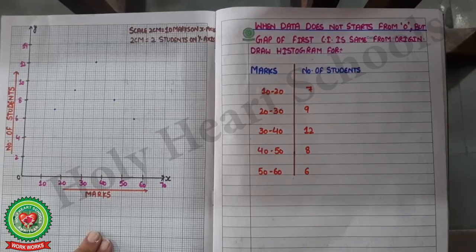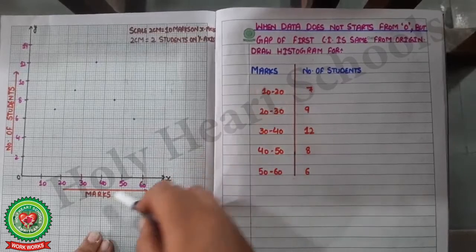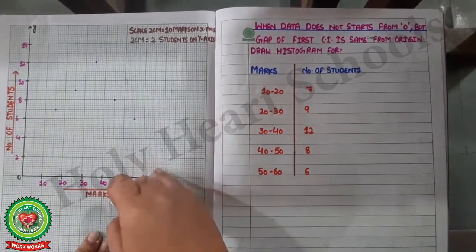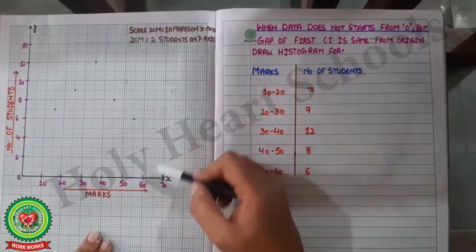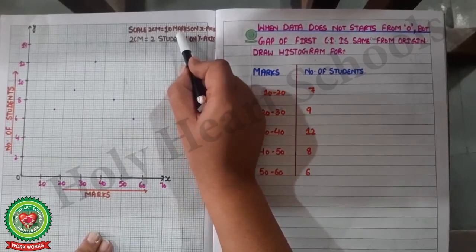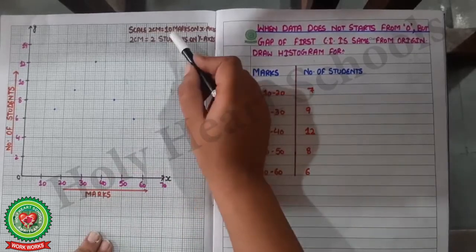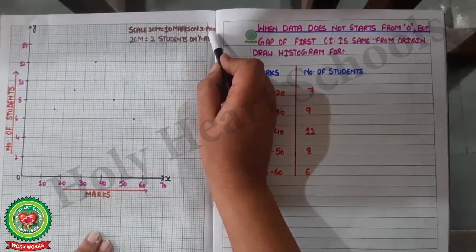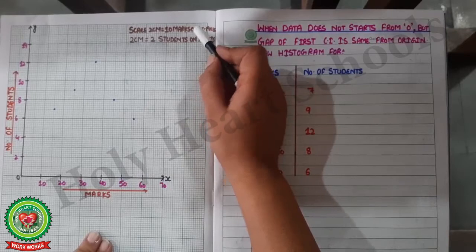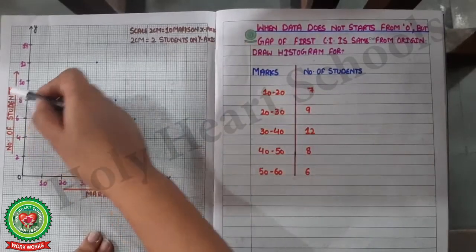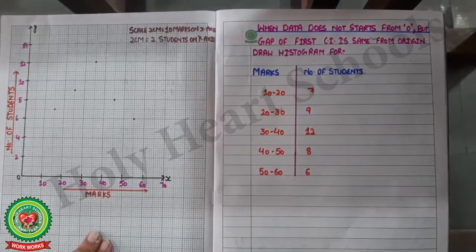As before, we write the y-axis, origin, and x-axis. The information is marks along x-axis and number of students along y-axis. For scale: 2 centimetres equals 10 marks on the x-axis — we write 'marks' instead of 'units' because marks are given. Along the y-axis, 2 centimetres equals 2 students.